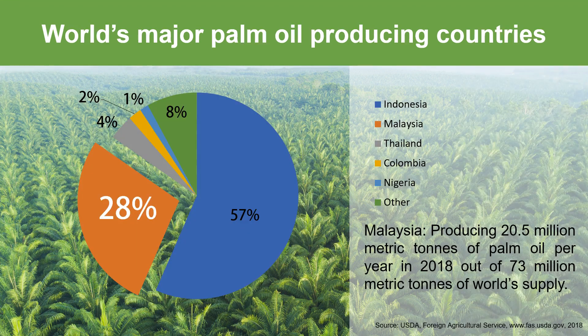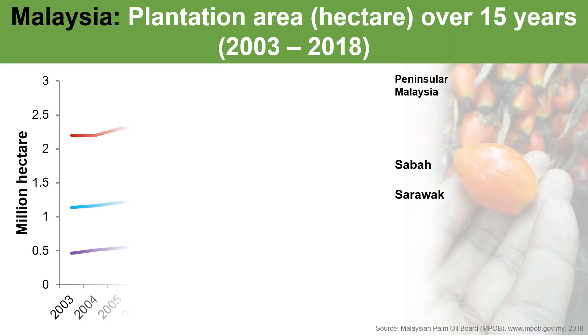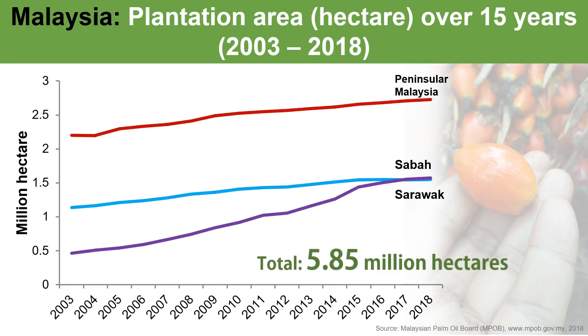Malaysia produces 28 percent of the global oil palm supply. The major producing country is Indonesia, followed by Thailand, Colombia, and Nigeria. In 2018, Malaysia produced 20.5 million metric tons of palm oil out of 73 million metric tons of global supply. Currently, 5.85 million hectares are planted with oil palm, and Sabah is one of the major producers in Malaysia.